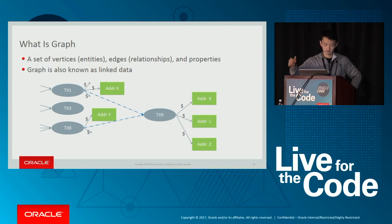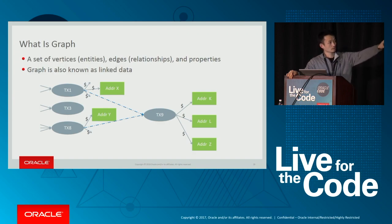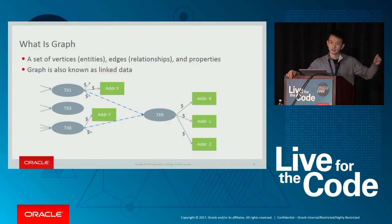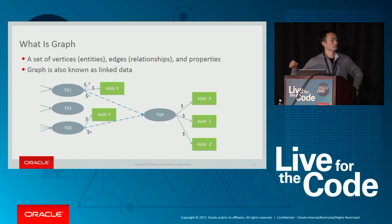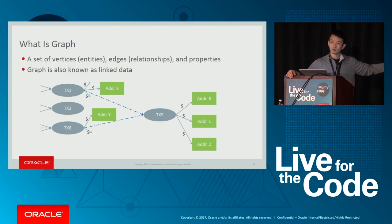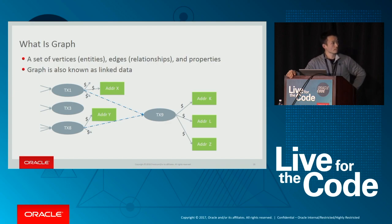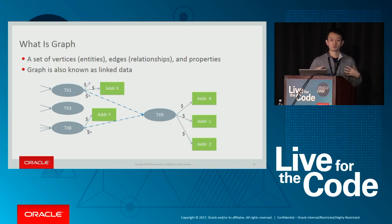Now is a good time to talk about what a graph is. What you're looking at is a graph. There are dots and rectangles — those are essentially nodes or vertices, representing entities. In this case, they represent transactions on the left, or Bitcoin addresses in the middle and right. The most useful thing is the links among the vertices or nodes. There's a Bitcoin movement from one transaction to another transaction, or from one transaction to a Bitcoin address. Essentially, a graph is nothing but linked data representing relationships.